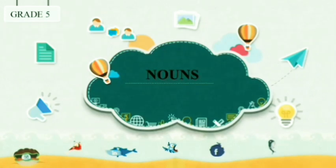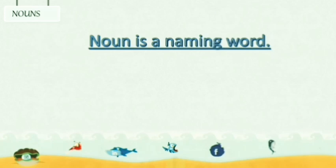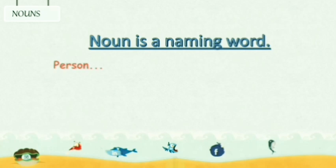Are you all ready to learn about nouns? Here, you may have a doubt — what is a noun? The answer is here. Noun is a naming word. It can be a name of a person. For example, you are a person. Your name, your friend's name, your father's name, your mother's name — it can be anybody's name.